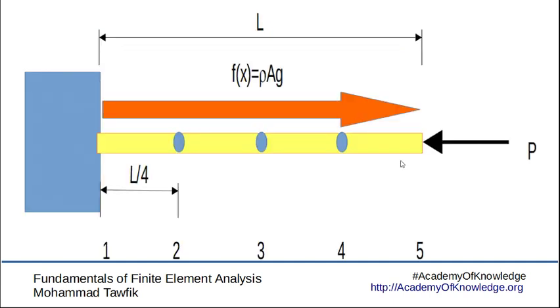Now let's go further and divide the bar into four elements instead of two. So now we will have five nodes. We will call them one, two, three, four, and five. And each element will have a length of L over 4. Still the same field, the same concentrated force.